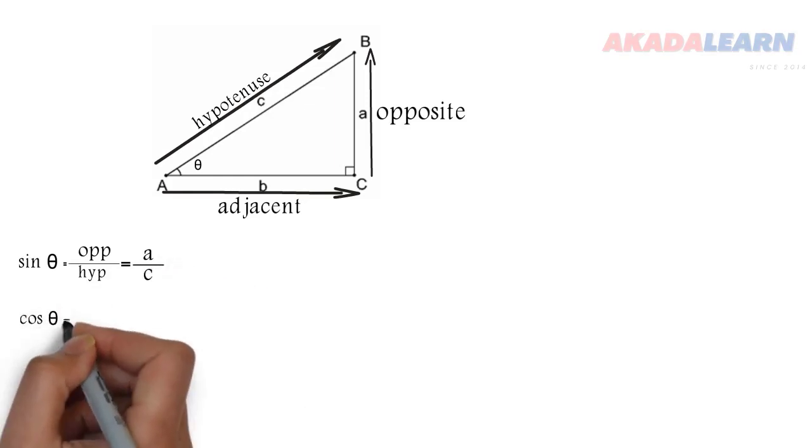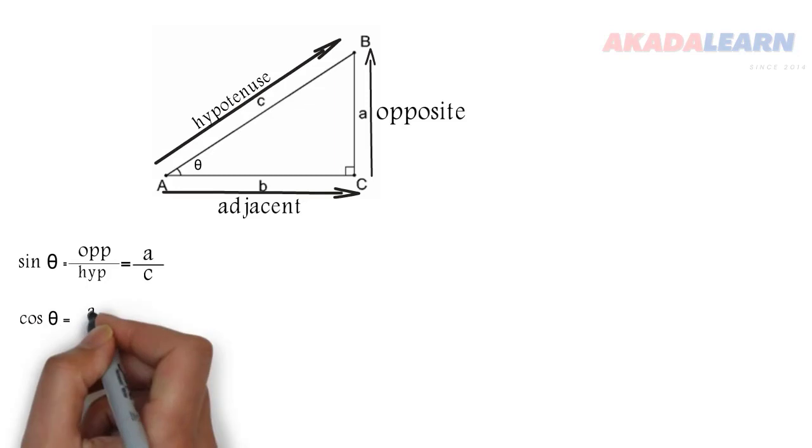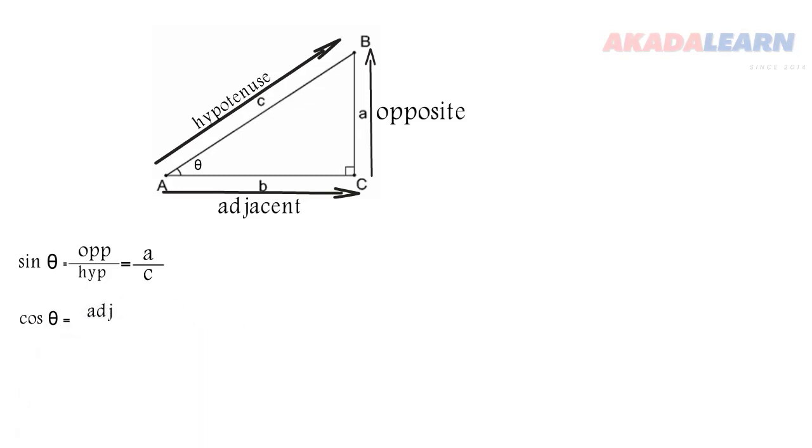Cosine theta is adjacent over hypotenuse. Our adjacent there is B and the hypotenuse is C, so I have B over C.